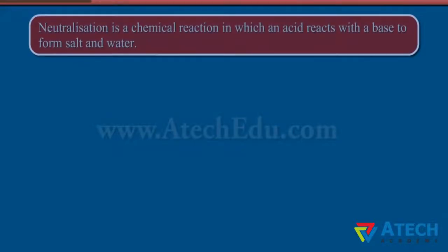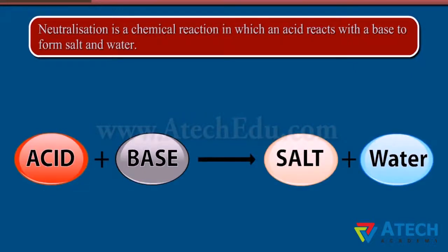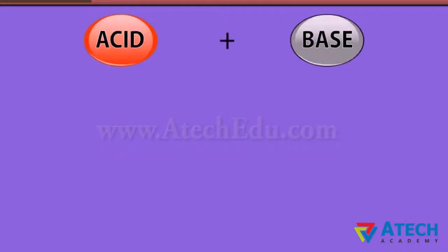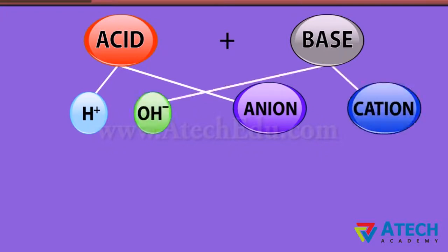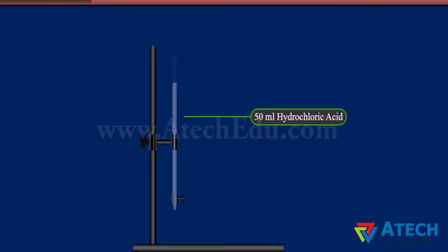Neutralization is a chemical reaction in which an acid reacts with a base to form salt and water. When acid and base react, the hydrogen ion from the acid combines with the hydroxide ion of the base to form a water molecule. The anion of the acid combines with the cation of the base to form salt.